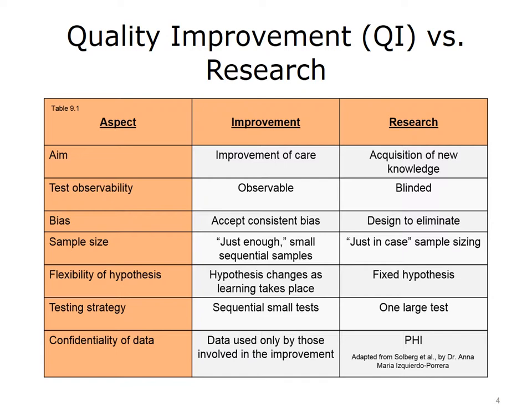When the aim is to acquire new knowledge, data are better collected blinded, when neither the researcher nor the subject are aware of the test being performed. Attempt to eliminate biases when they exist and collect a wide variety of data points for a sample size determined through a power calculation.